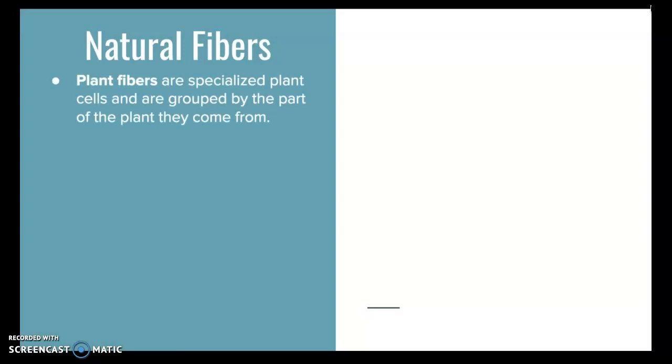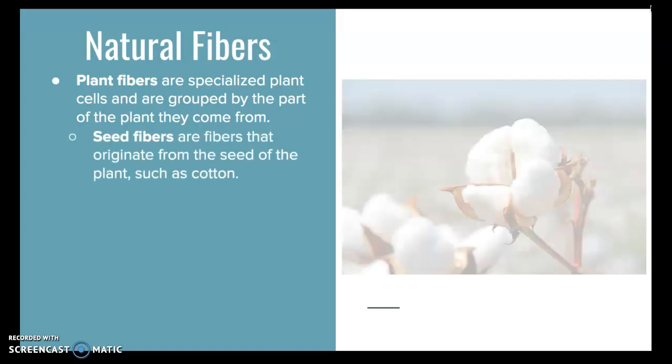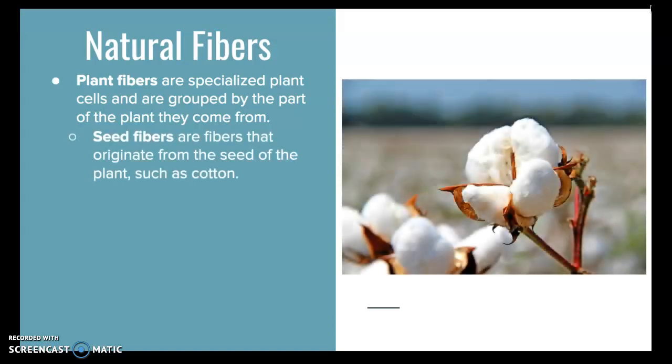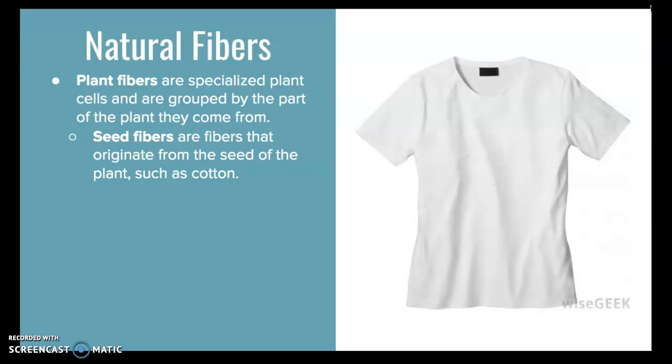Plant fibers are specialized plant cells and are grouped by the part of the plant they come from. Seed fibers are fibers that originate from the seed of the plant, such as cotton. Here's an example of just a regular t-shirt made from cotton.